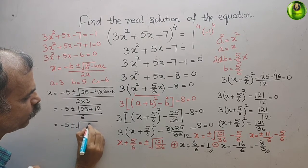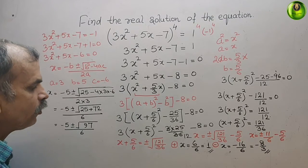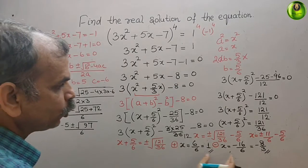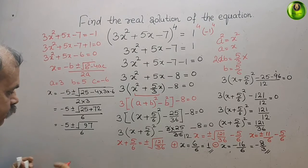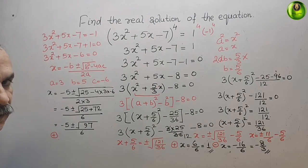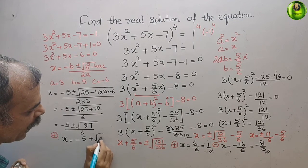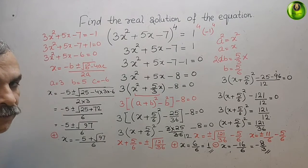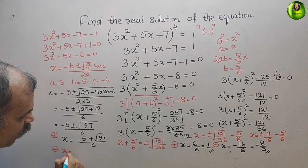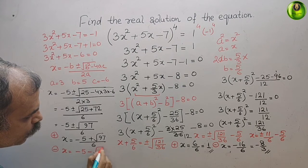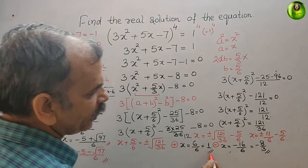We get x = (-5 ± √97) / 6. So there are four answers in total: x = 1, x = -8/3, x = (-5 + √97)/6, and x = (-5 - √97)/6.